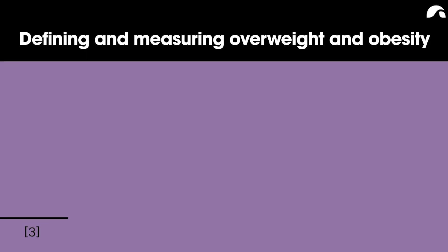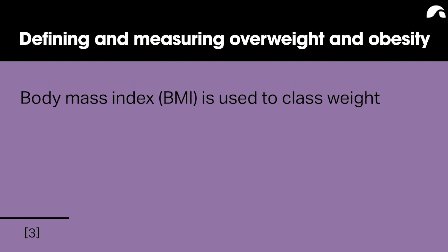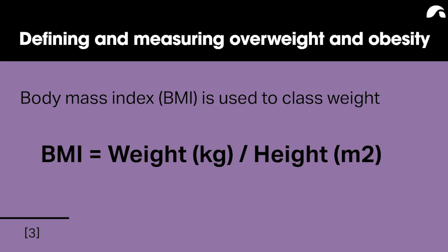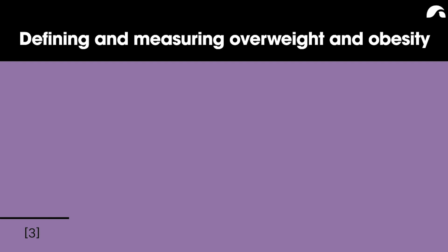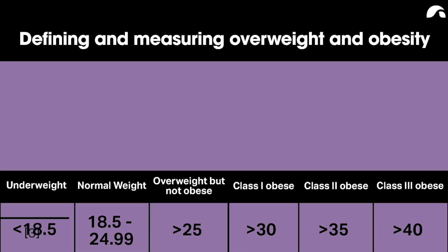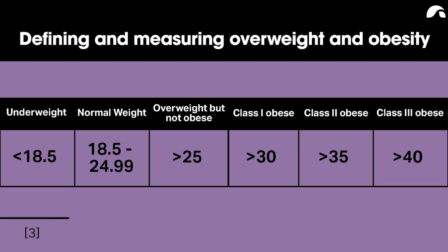Finding and measuring overweight and obesity: Body Mass Index (BMI) is used to classify weight. It is calculated as the ratio of weight in kilograms divided by height in meters squared — that is, BMI equals weight (kg) divided by height (m²). How about calculating your own?